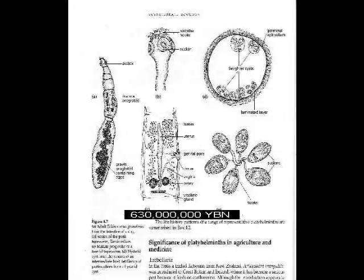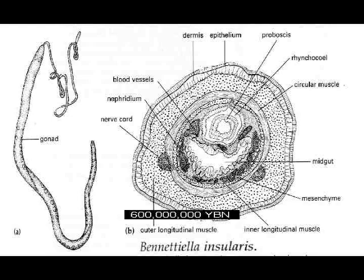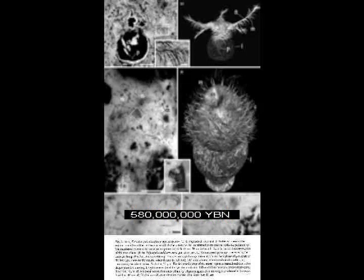Intestine. Genital pore. Vagina and uterus. Penis. Red blood cells and blood vessels. Protostomes — ancestor of all arthropods and mollusks. First shell or skeleton.